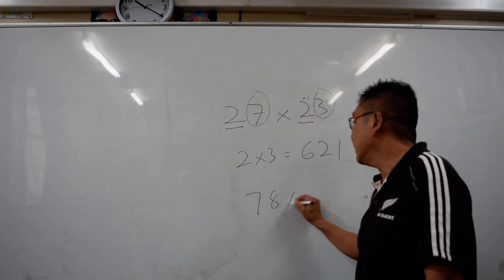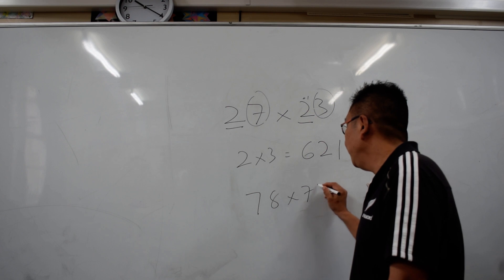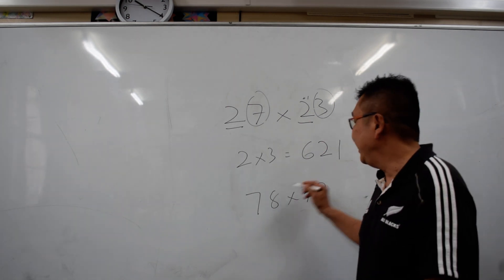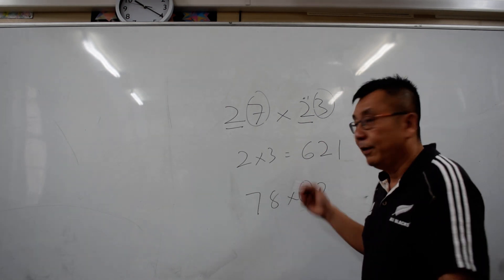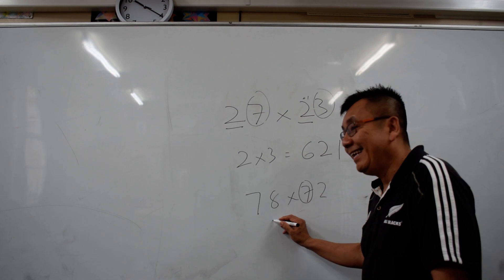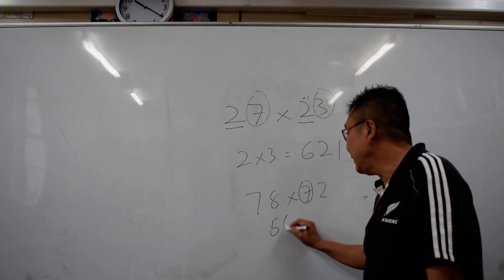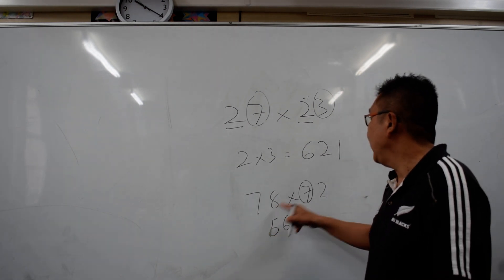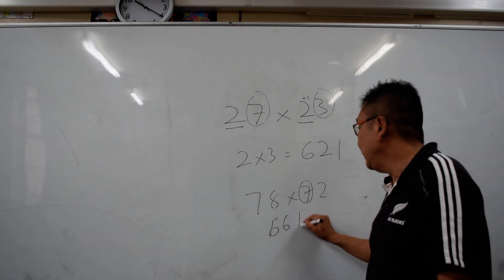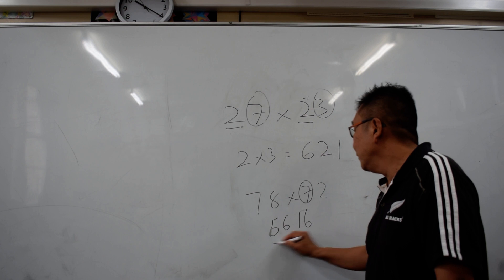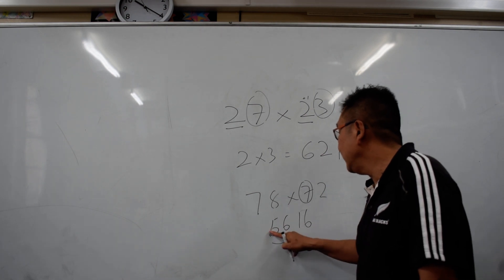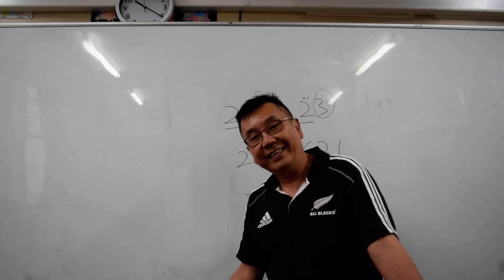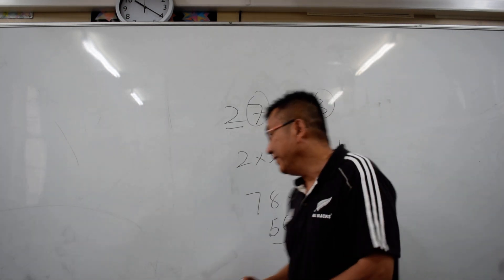78 times 72. You increase the first digit by 1, so 7 times 8 is 56. And then 8 times 2 is 16. So the answer is 5,616.